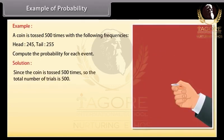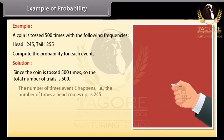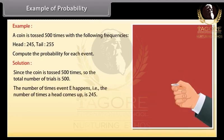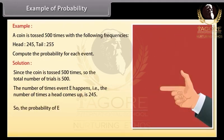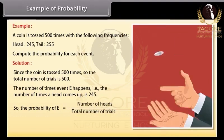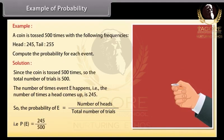Since the coin is tossed 500 times, so the total number of trials is 500. The number of times event E happens, that is, the number of times a head comes up is 245. So the probability of E is equal to number of heads upon total number of trials, that is, P(E) equals 245 upon 500 equals 0.49.